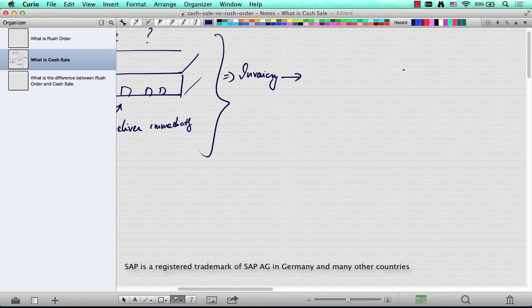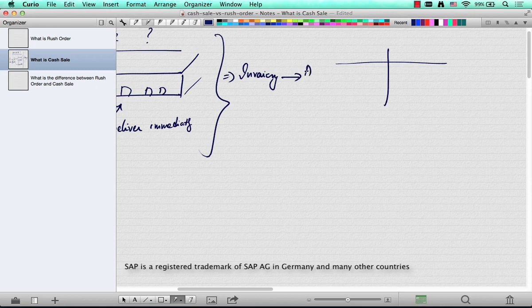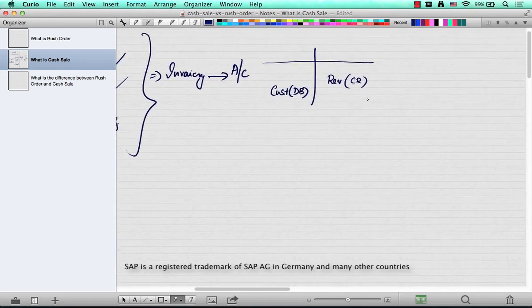In a typical invoicing scenario, what happens when the accounts are posted to? Your credits are here and the debits are here. The revenue account is credited and the customer recon account is debited. And this is as soon as the invoice is posted.